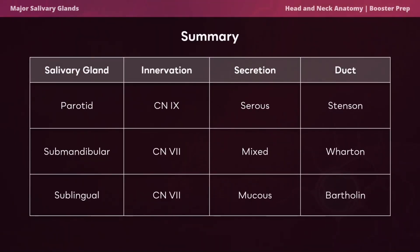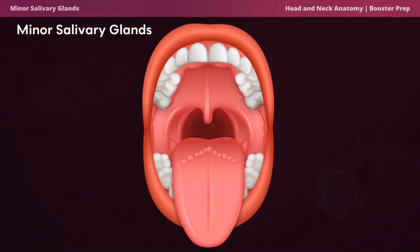Here is a summary table of the major salivary glands. The parotid is innervated by cranial nerve 9, secretion is serous, and the duct is Stensen's. The submandibular is innervated by cranial nerve 7, secretion is mixed, and the duct is Wharton's. The sublingual is innervated by cranial nerve 7, secretion is mucous, and the duct is Bartholin's.